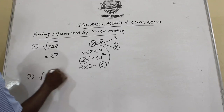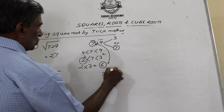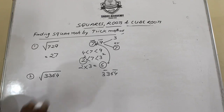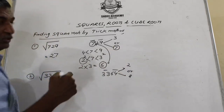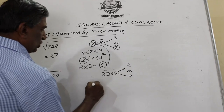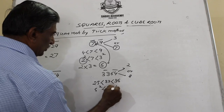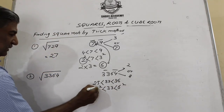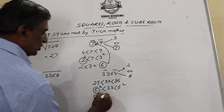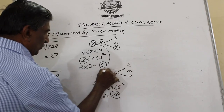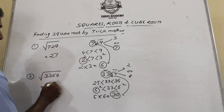Let's do one more example: √3364. I write this as 3364, placing a bar on every two digits from the right. Options for the units digit 4 are: 2 (2×2=4) or 8 (8×8=64). Now 33 lies between which perfect squares? 25 < 33 < 36, meaning 5² < 33 < 6². So the tens digit is 5. Multiply 5 by its successor 6: 5×6 = 30. Compare 33 and 30 — 33 is bigger, so we take the bigger units option, 8.